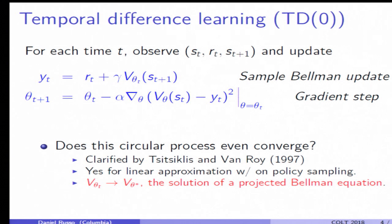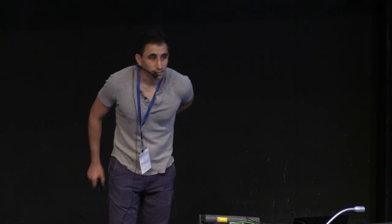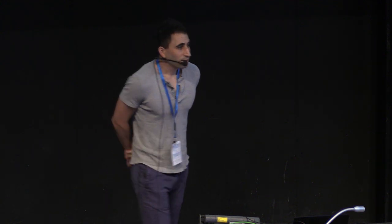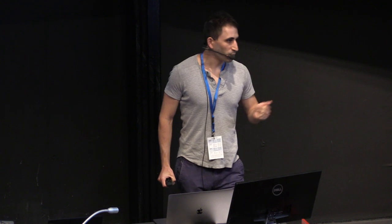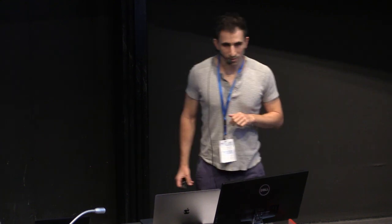And it converges to a projected version, the solution of a projected version of Bellman's equation. Now, I think that is great, but at the same time, we should push further to wonder if we converge to this point, do we get there efficiently? With a small amount of computational effort and with a small number of samples.